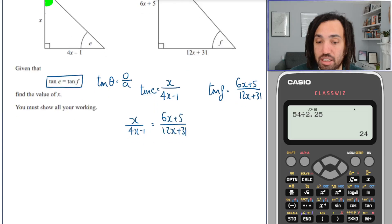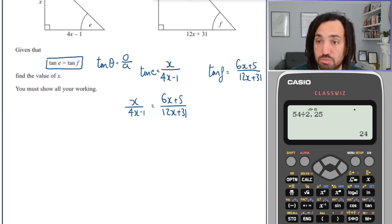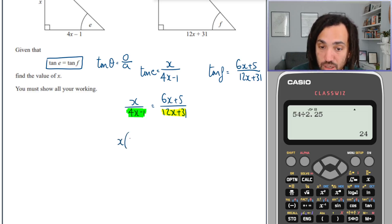We can do a method here called cross multiplying, which means I'm going to multiply both sides by this and that's going to move it up to the left hand top. And I'm also going to multiply both sides by this, which is going to move that up to the right hand top. So cross multiplying in action there.